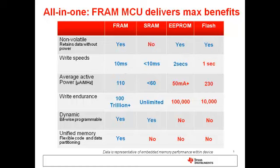A new dimension that FRAM adds is the ability to configure unified memory. This means that a single block of FRAM can serve as either code, data, or constant memory depending on how it is configured. Flash was not the preferred choice for variable memory due to the erase time requirements, while SRAM was not the preferred choice for code storage due to its volatile nature. FRAM meets the best of both worlds in that it can be used easily for code or data due to its non-volatile nature while supporting fast writes.